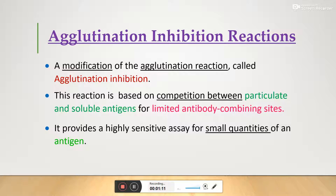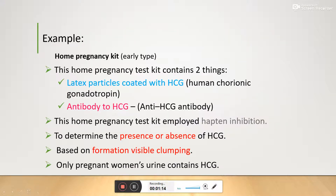The best example for agglutination inhibition reaction is the home pregnancy kit — the early type home pregnancy kit. This kit contains two things: lactose particles coated with HCG (human chorionic gonadotropin), which is a hormone produced only during pregnancy, and anti-HCG antibodies. These are the two components present in the pregnancy kit.